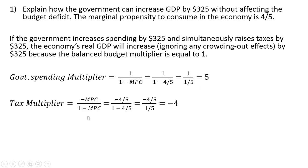The tax multiplier is given by this formula. Plugging in four-fifths for MPC and simplifying, we get a tax multiplier of minus 4. Notice if you were to net these two multiplier numbers, you're just going to get one.